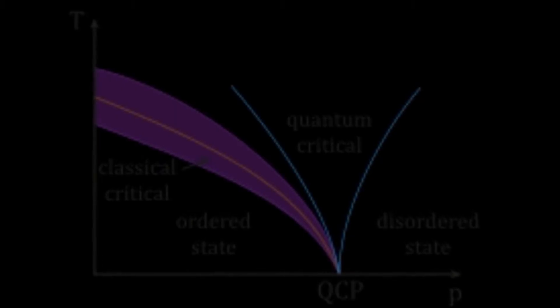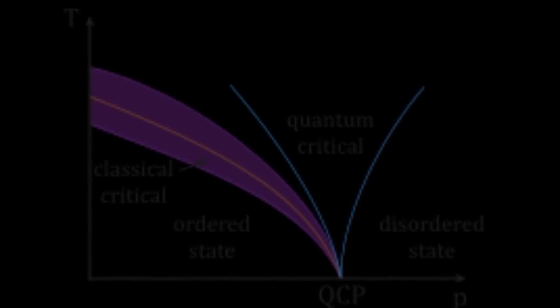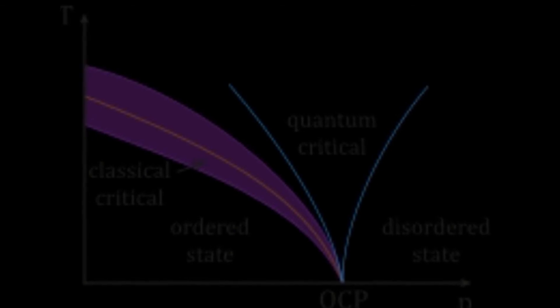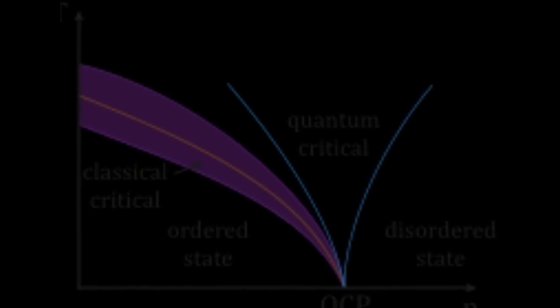When neutrons are scattered from hydrogen-containing materials, they produce diffraction patterns with high noise levels. However, the material can sometimes be treated to substitute deuterium for hydrogen.